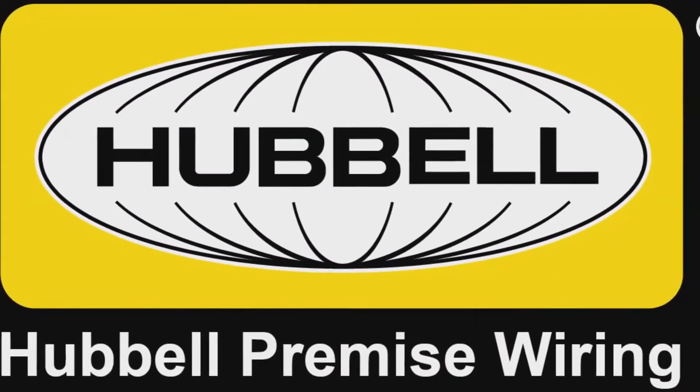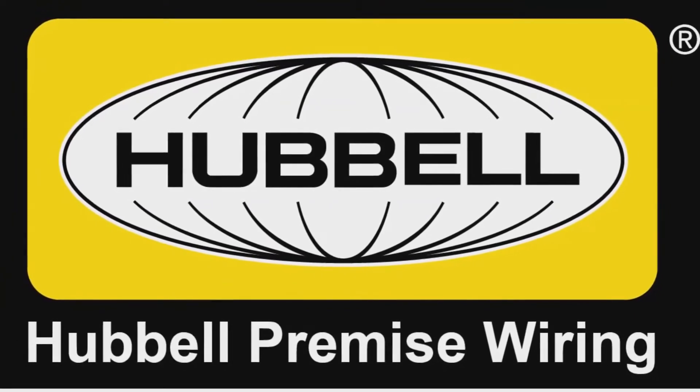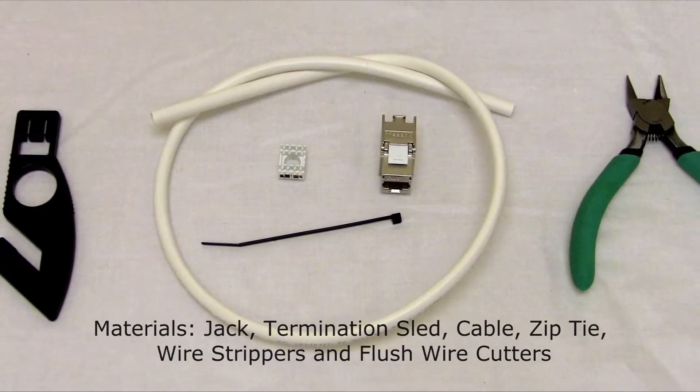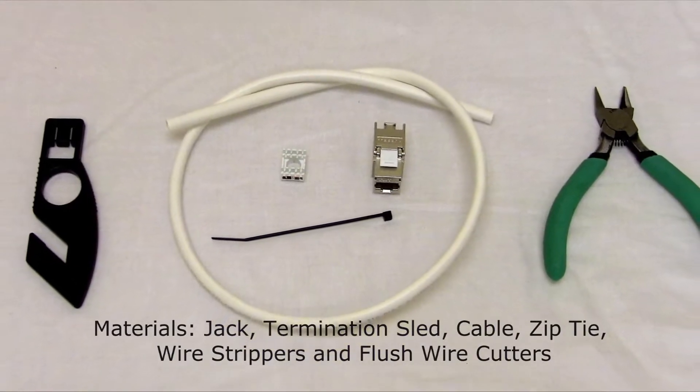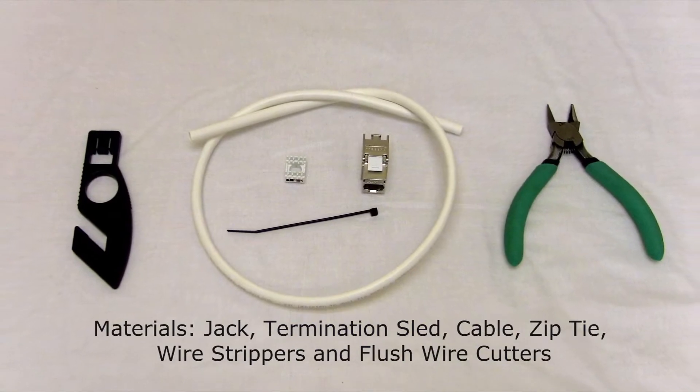Welcome to this instructional video on how to terminate Hubble's Category 6 and 6A shielded jack connector. The components needed for this process are the jack, termination sled, cable, and a zip tie. You will also need flush wire cutters and wire strippers to complete the termination process.